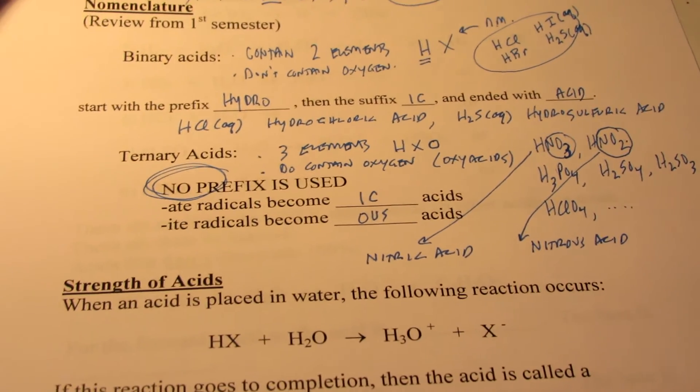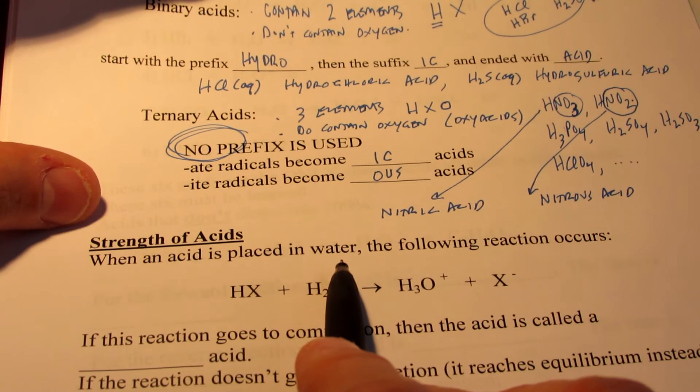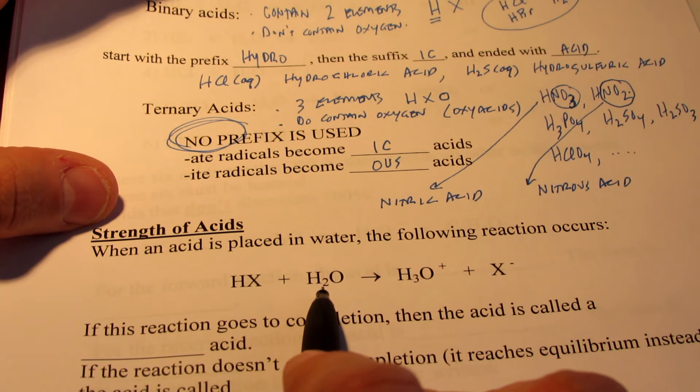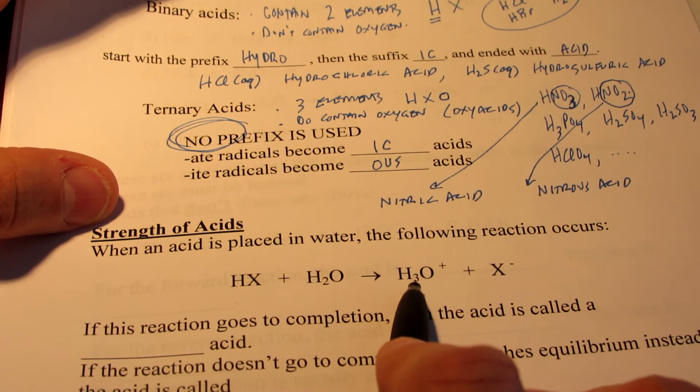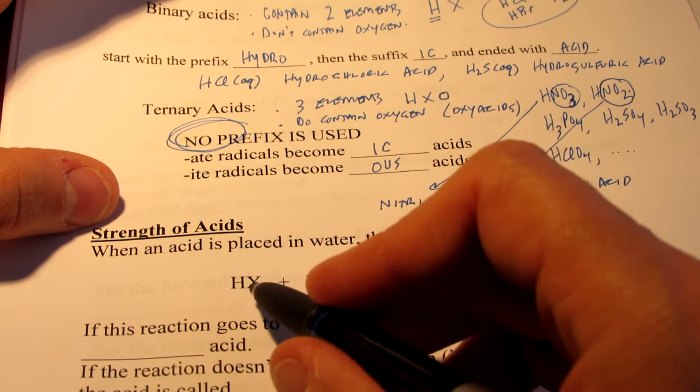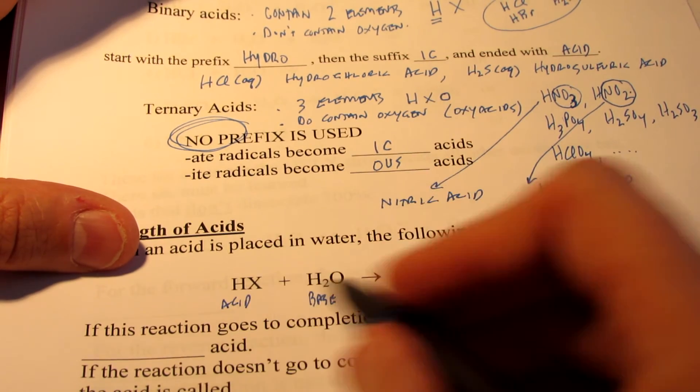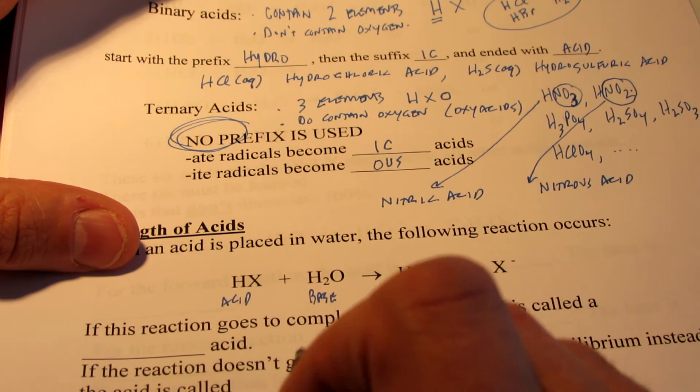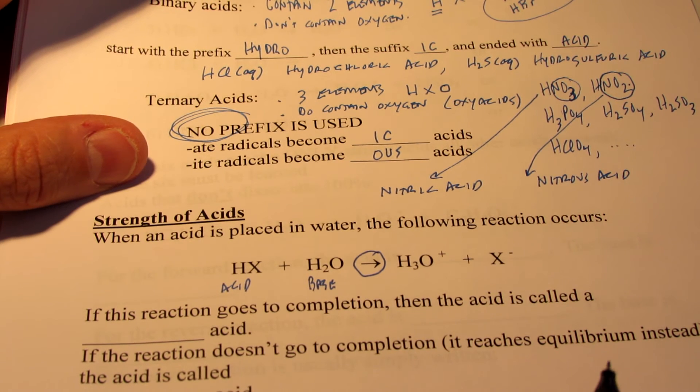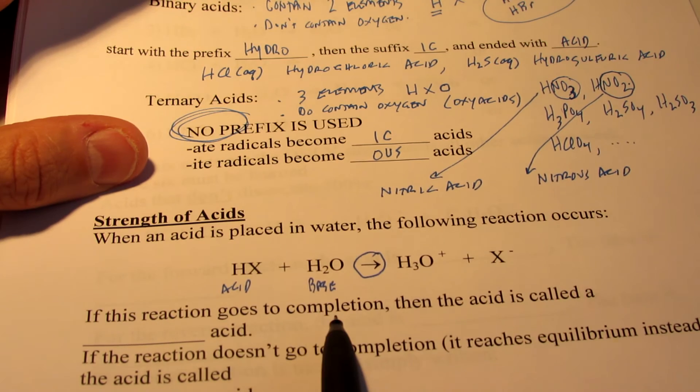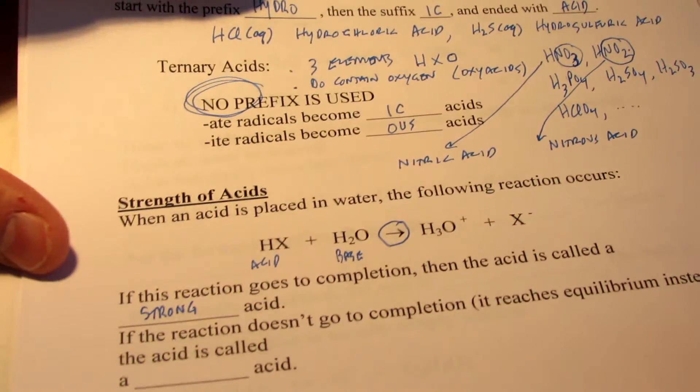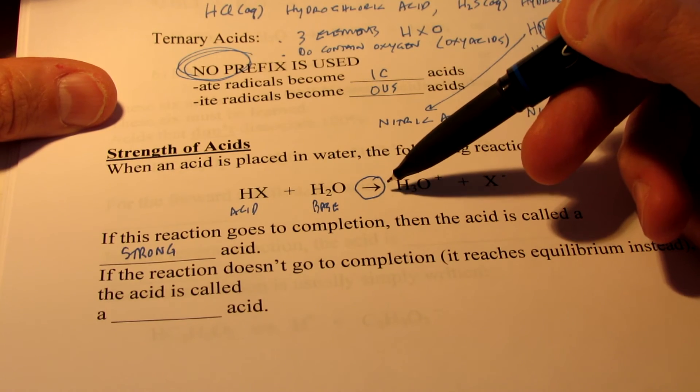And we'll wrap up today talking about the strength of acids. When an acid is placed in water, the following reaction occurs. We're just going to take a simple binary acid here, HX. When I place it in water, the water can gain a proton to become H3O+. You'll notice here that the water is acting as a base because it's accepting a proton from the acid. This is losing a proton and turning into X- so it's called an acid. Now you'll notice that the arrow in this case is going in one direction. That means it's not reaching equilibrium. If the arrow goes in one direction, we say the reaction goes to completion. And the acid is called a strong acid.